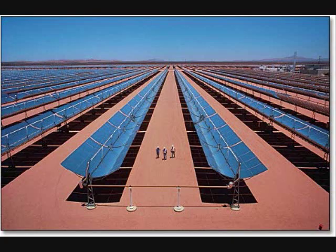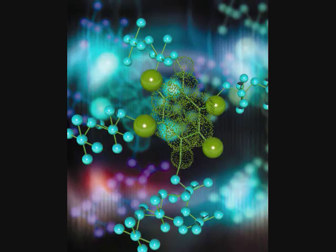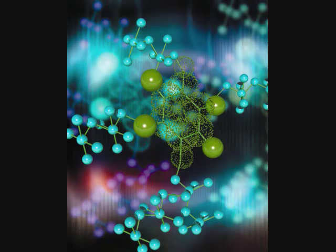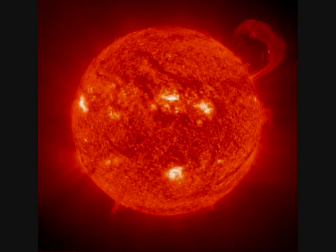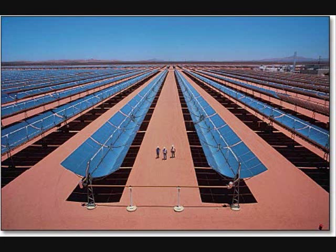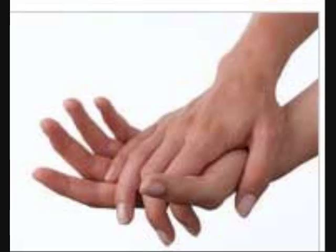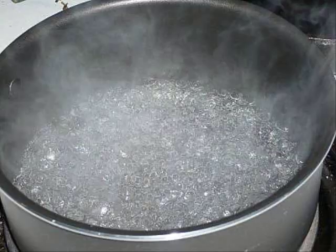Thermal energy, or heat, is the vibration and movement of the atoms and molecules in objects. As an object is heated up, its atoms and molecules move and collide faster. Geothermal energy is the thermal energy in the Earth. The sun is the biggest source for thermal energy. Some examples of thermal energy are a fire, rubbing your hands together causing friction, and boiling water.